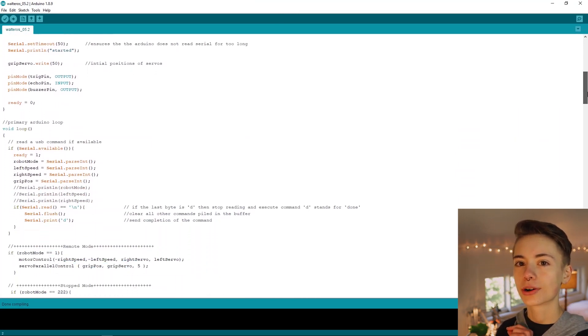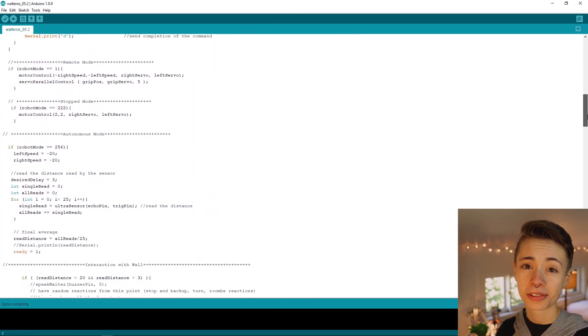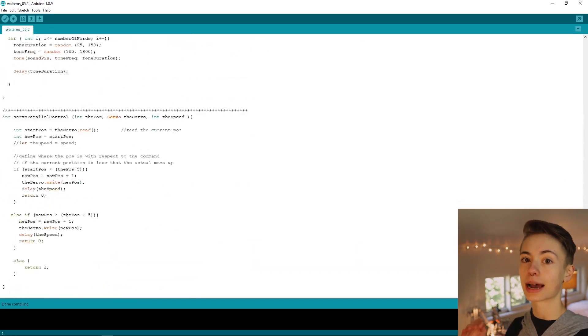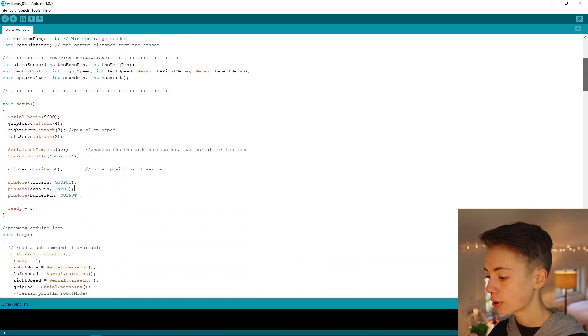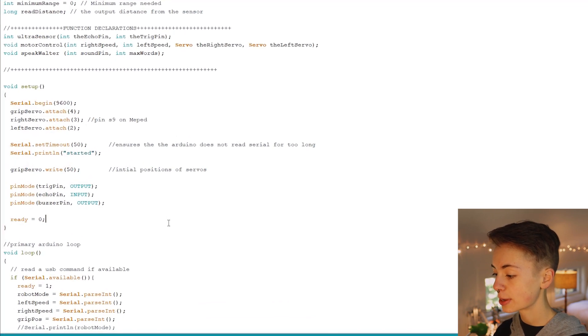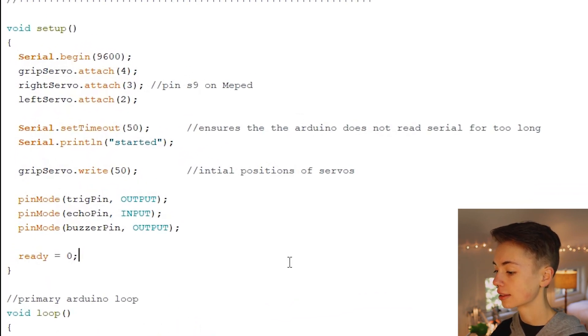Before we download to the Arduino, let's take a little tour of this code. You don't need to be fluent in the Arduino language to understand the basics of what's happening in this sketch. Right here where it says void setup parentheses is what we call the setup function. When the code is first run, it'll go through whatever we put between this opening curly brace and this closing curly brace once. In the setup function, these commands tell the Arduino which pins the left and right servos are plugged into. Our left one is connected to pin 2 and our right one to pin 3.